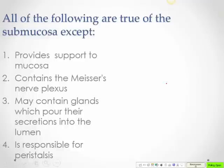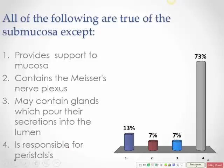The submucosa is not responsible for peristalsis — that is performed by the muscularis externa. The submucosa has connective tissue for support, contains the Meissner's nerve plexus, and contains glands. It is important to examine histological images carefully to identify these features.